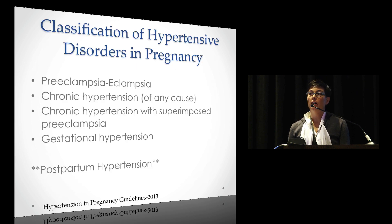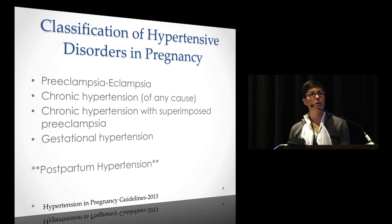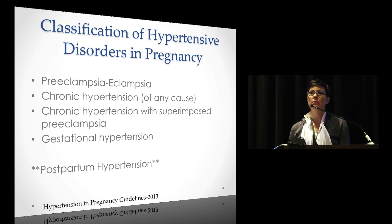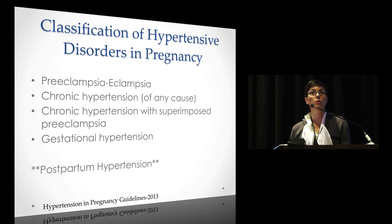They classified preeclampsia under a broad classification of hypertensive disorders of pregnancy with four different classes, plus postpartum hypertension noted separately. Gestational hypertension has been a catchment for patients that didn't quite meet preeclampsia criteria. Postpartum hypertension is not part of the formal classification, but the executive summary notes that women can develop preeclampsia even immediately postpartum after a normotensive pregnancy — something we should be looking for and not ignoring.